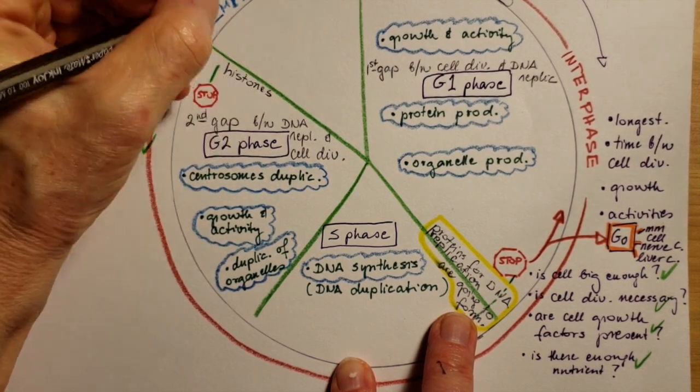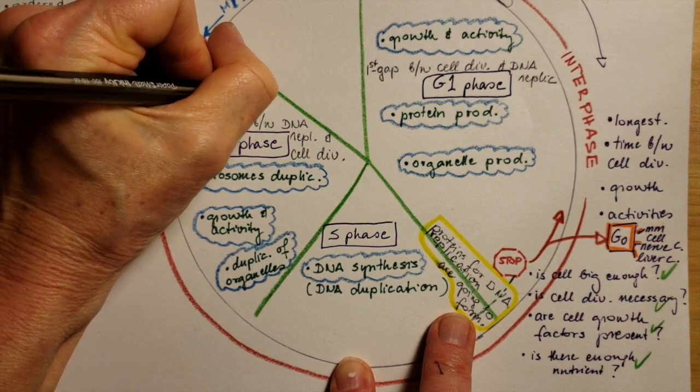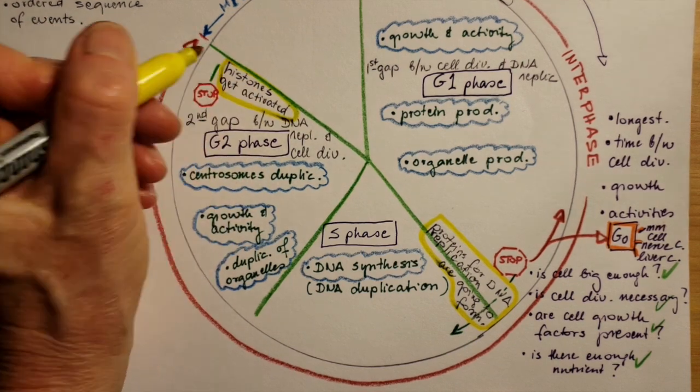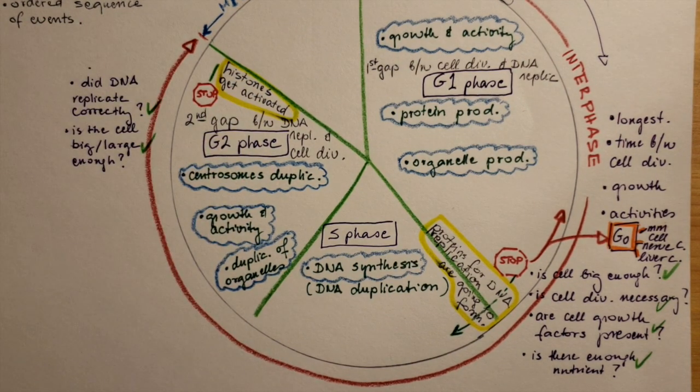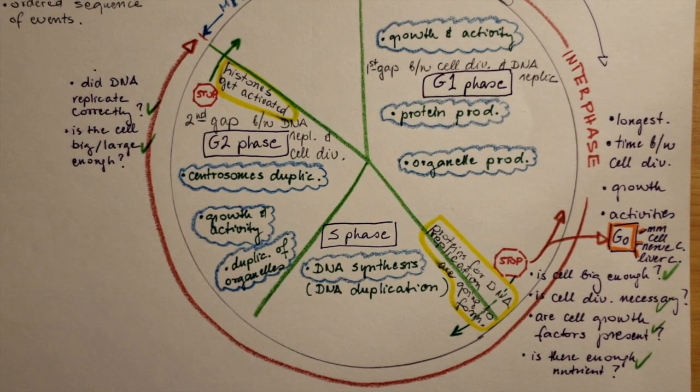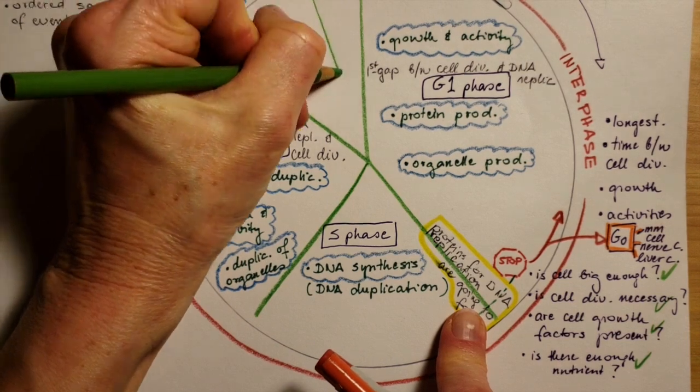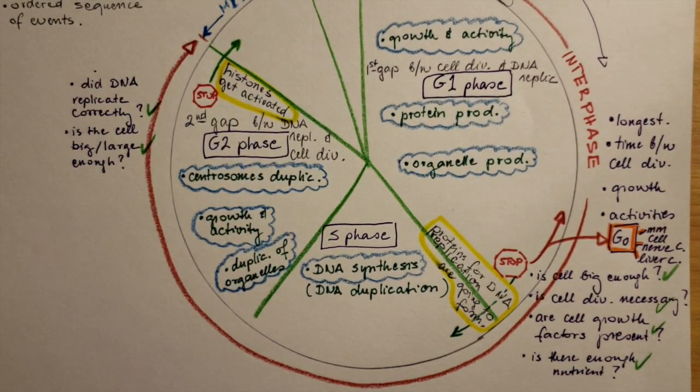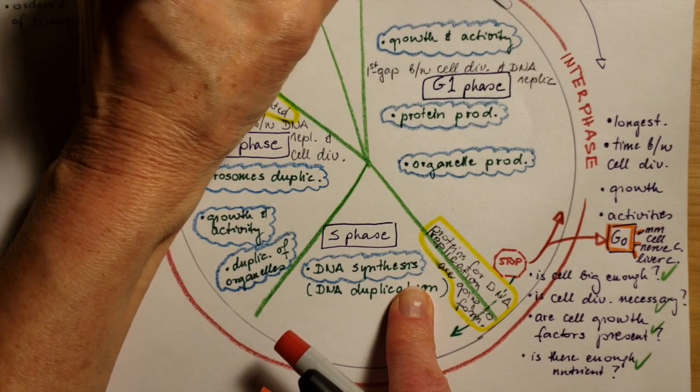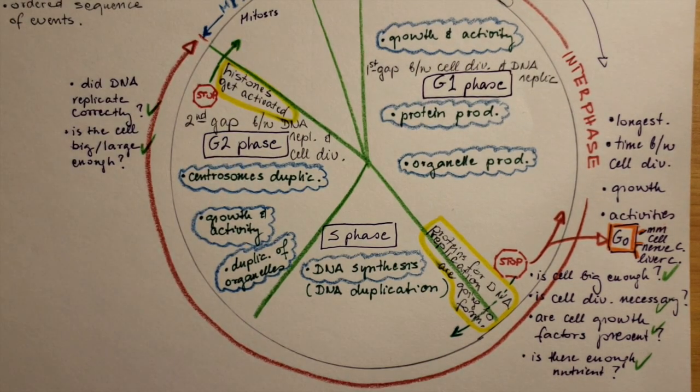The histones get activated around the chromatin and the chromatin starts to coil up and starts to condense to form chromosomes. The mitotic phase is divided up into two parts, mitosis and cytokinesis.